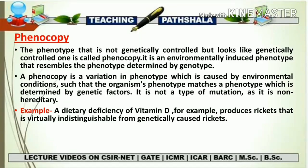So phenocopy is the phenomenon in which a particular character appears to be genetically controlled — meaning the body's genes seem to be controlling that character — but the actual reason behind it is that it has been induced or controlled by some environmental factor. This creates confusion about whether the phenotype arose due to a genetic effect or an environmental effect. The first example: dietary deficiency of vitamin D produces rickets that is virtually indistinguishable from genetically caused rickets.